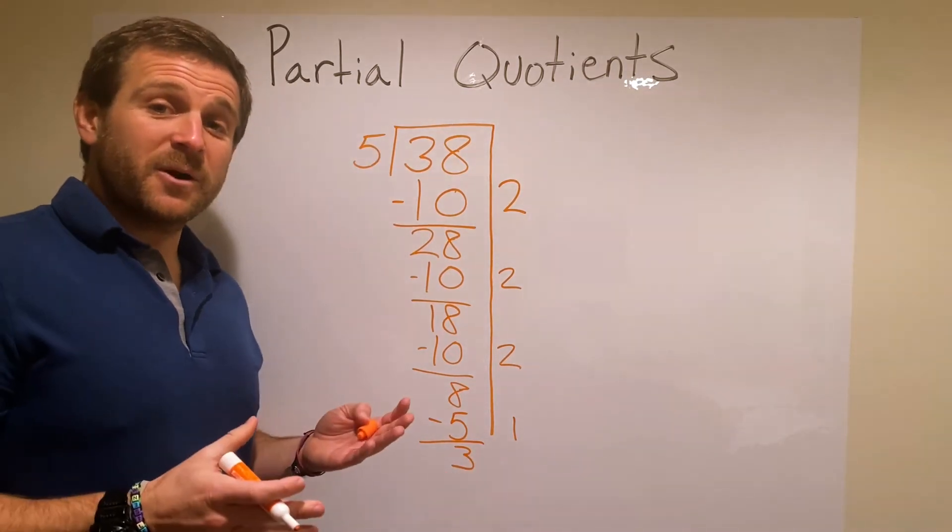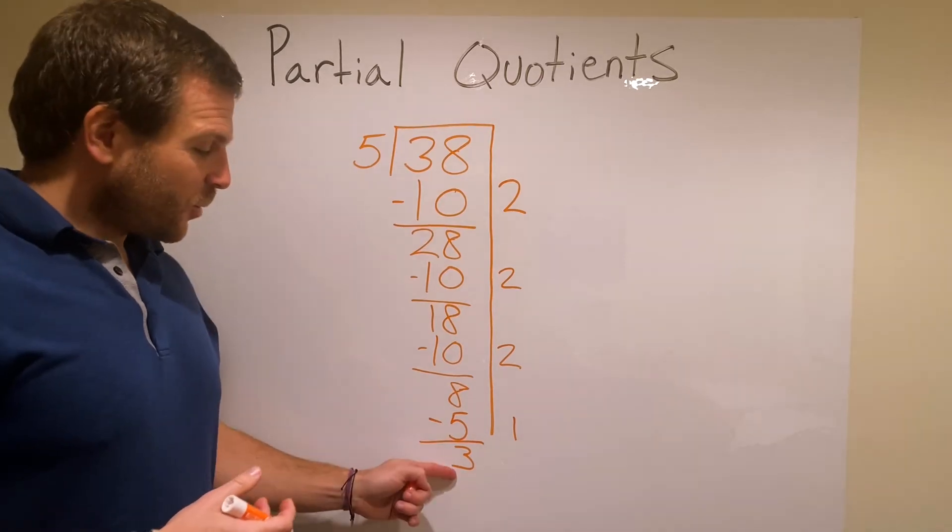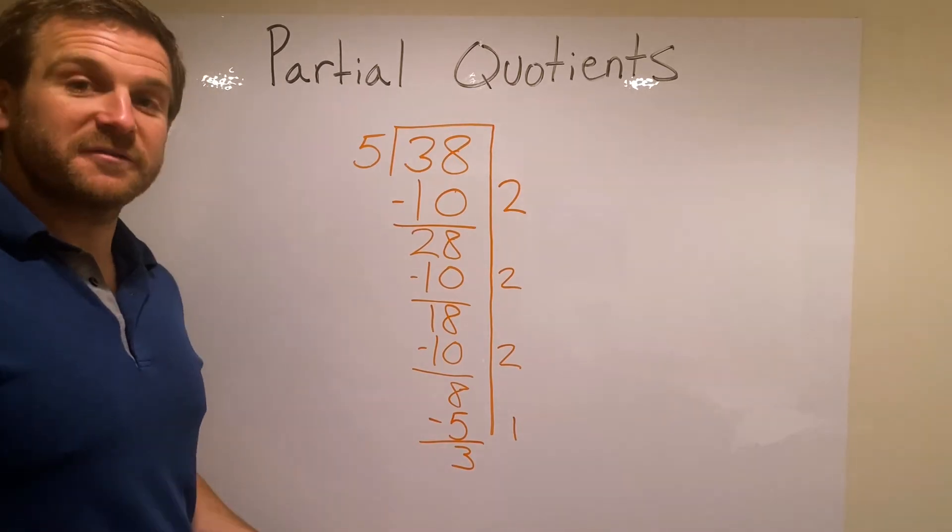This is another great part about partial quotients. It really helps us out when we get to the remainder. When I look here, I cannot remove a group of 5 from 3. 3 is smaller than 5.